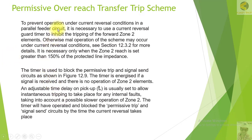To prevent operation under current reversal conditions in a parallel feeder circuit, it is necessary to use a current reversal guard timer to inhibit the tripping of the forward zone 2 element. Otherwise, maloperation of the scheme may occur under current reversal conditions. This is necessary only when zone 2 reach is set greater than 50% of the protected line impedance.